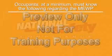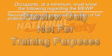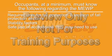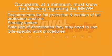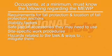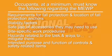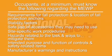MEWP operators must provide instructions and ensure all occupants have a basic level of knowledge to work safely on an MEWP. At least one occupant must be taught how to operate the MEWP controls in case of an emergency where the operator becomes incapacitated. This does not give the occupant the authority to operate the MEWP except in an emergency. Occupants at a minimum must know the following: requirements for fall protection and location of fall protection anchors; stability factors; safe use of accessories they may need to use; site-specific work procedures; hazards related to the task and ways to mitigate them; intended purpose and function of controls and safety-related items, including emergency shutdown and lowering procedures; and manufacturer's warnings and instructions.